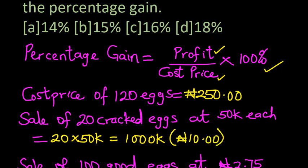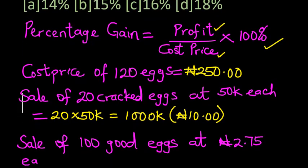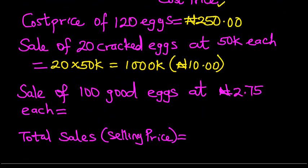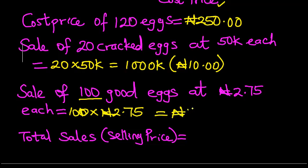Now, the sale of the remaining eggs. Out of 120 eggs, 20 eggs were cracked, so we have 100 left. So the sale of 100 good eggs at 2 naira 75 kobo each. That is 100 eggs times 2 naira 75 kobo. This will give us the sale of 275 naira. That's the selling price of 100 good eggs.